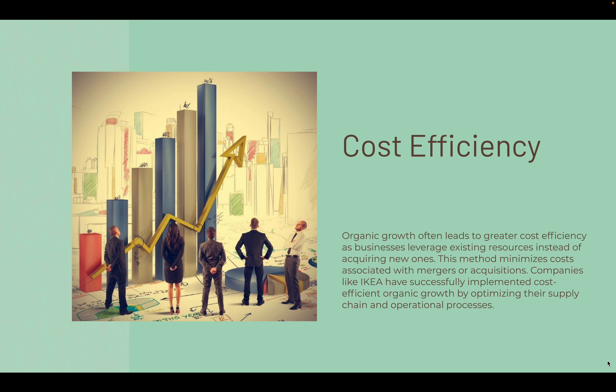You make do with what you have as a business. If you have a factory manufacturing a product, make sure you're utilizing that capacity — the factory, the workers, the machinery — and making everything as efficient as possible. That is organic growth.